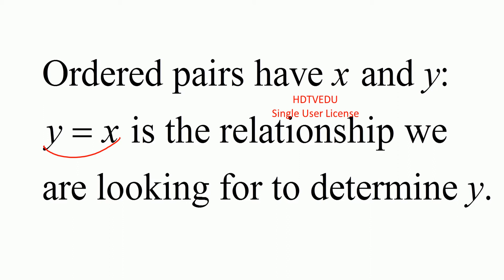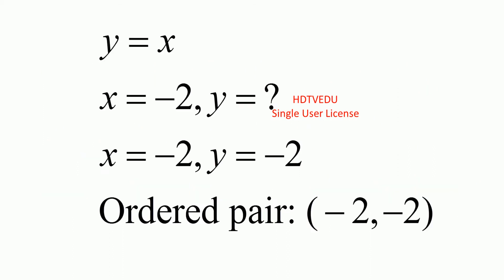So what did we do? We chose x: negative 2, negative 1, 0, 1, 2. Who asked you to choose those points? Well, we arbitrarily chose them.